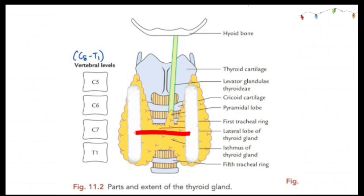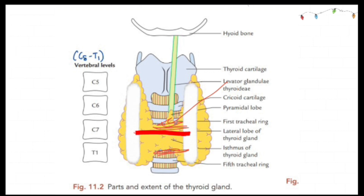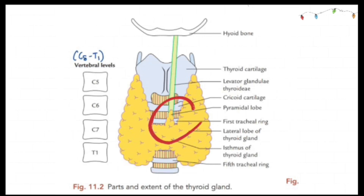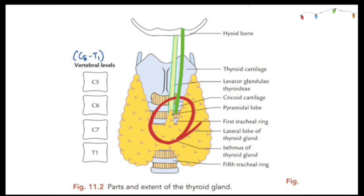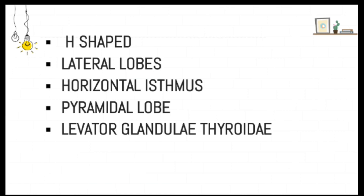The horizontal isthmus extends from the second tracheal ring to the fourth tracheal ring. So the main parts are two lateral lobes and a connecting horizontal isthmus. Sometimes there is a small pyramidal lobe arising from the left part of the isthmus, connecting up to the hyoid bone via the levator glandulae thyroideae — a green structure seen in the figure. This pyramidal lobe and levator glandulae thyroideae are not present in every case.